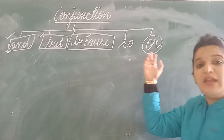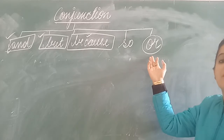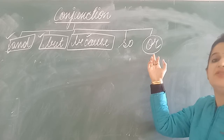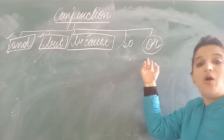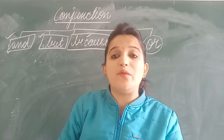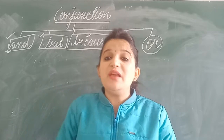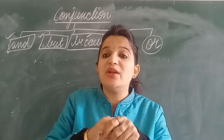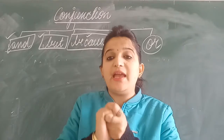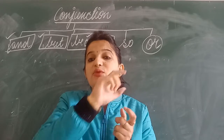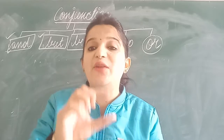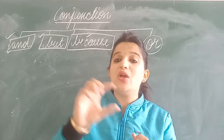Today we are going to discuss a new conjunction word — that is 'or'. Before giving you an example of 'or', let me tell you where we use 'or'. We use the conjunction word 'or' when you are having a choice. If you are having a choice, if you are seeing choices given in the sentence, we will use 'or'.